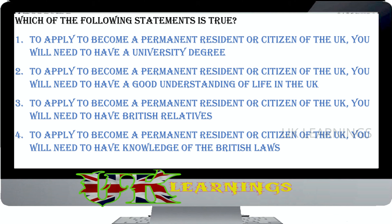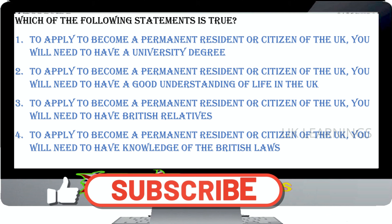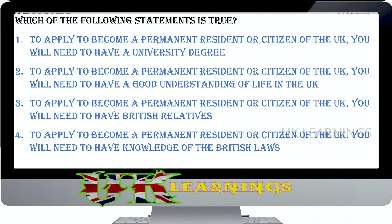Which of the following statements is true? To apply to become a permanent resident or citizen of the UK you will need to have a university degree; or you will need to have a good understanding of life in the UK; or you will need to have British relatives; or you will need to have knowledge of British laws. The correct answer is: to apply, you will need to have a good understanding of life in the UK and be able to speak and read English.